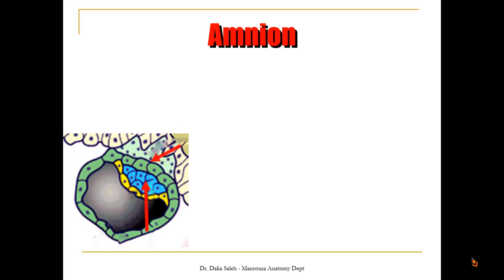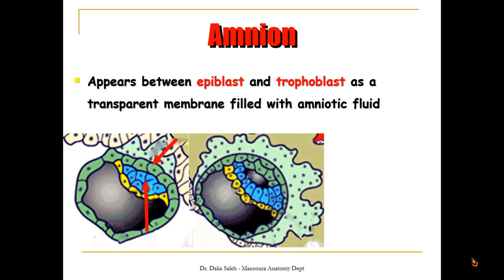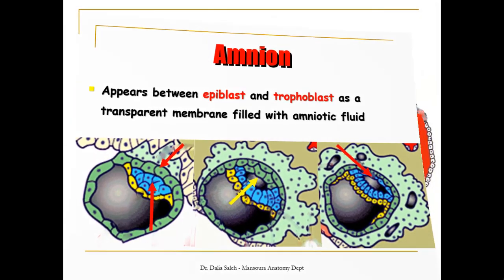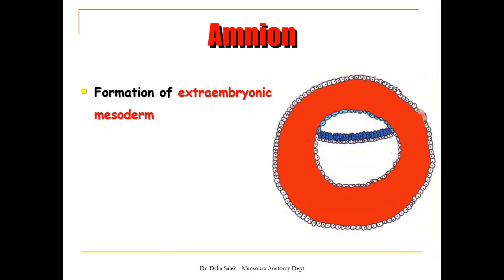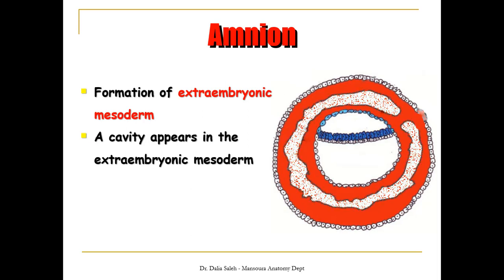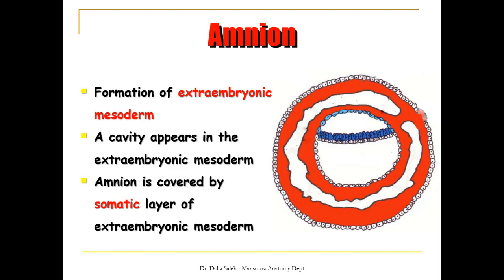To start with the amnion: these are the epiblastic cells, and this is the trophoblastic cell or cytotrophoblast. The amnion first appears between the epiblast and the trophoblast as a transparent membrane filled with amniotic fluid. Later on, it will be lined from inside by a layer of cells called amnioblastic cells. Then the extra-embryonic mesoderm forms, small cavities appear within it that collapse together and form a single cavity, which splits the extra-embryonic mesoderm into somatic and splanchnic layers.